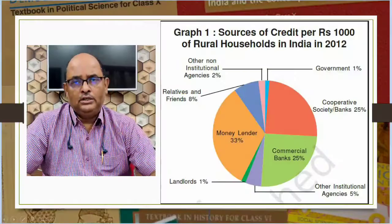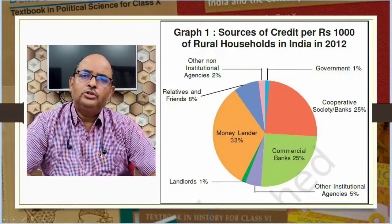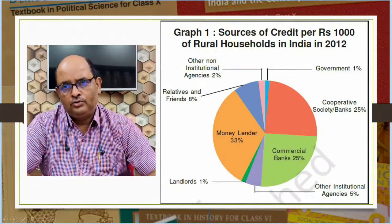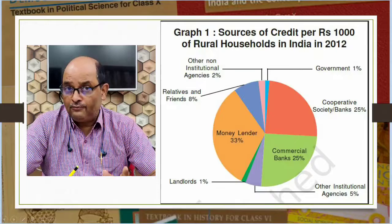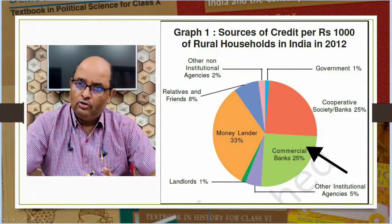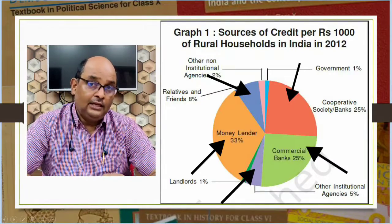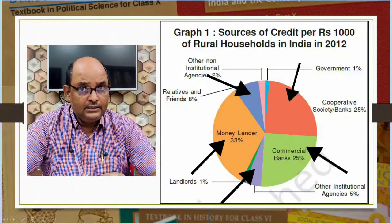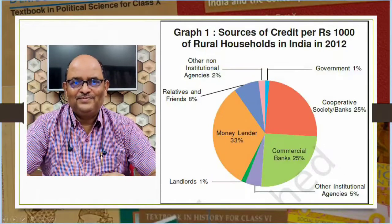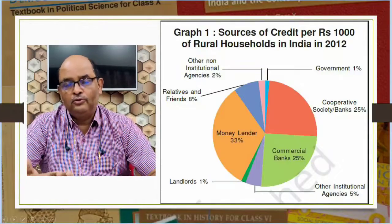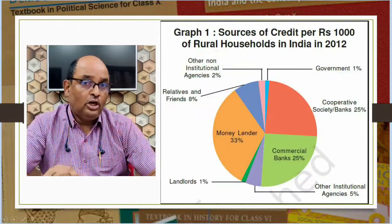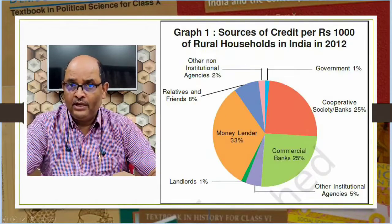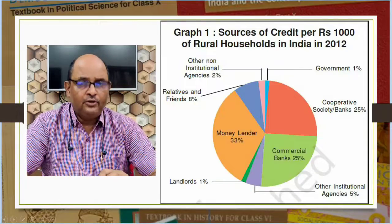Now let us see Graph 1 given in your book. It shows sources of credit for rural households in India in 2012, showing the variety of sources of loans — commercial banks, cooperative societies, landlords, money lenders, traders, relatives, friends, etc. It also shows how much credit is coming from formal sources and how much from informal sources.